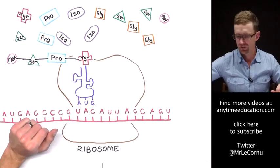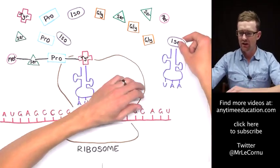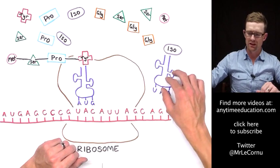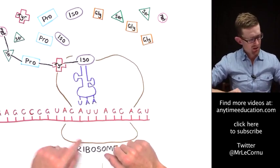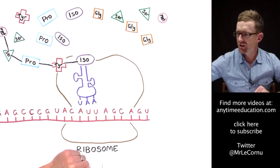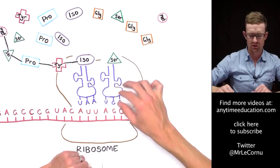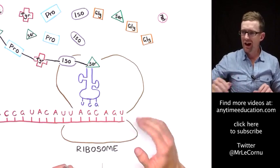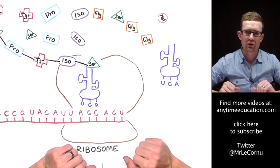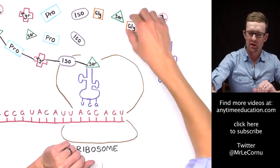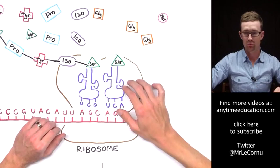Our polypeptide chain is really growing. The next transfer RNA comes in — AUU is the corresponding codon for isoleucine, so isoleucine is collected and delivered to the ribosome. Then AGC — we've had that one before — it coded for serine, so another serine amino acid is collected and delivered. The last codon here is AGU, which also codes for serine. Remember, in some cases there is more than one codon for a particular amino acid. A transfer RNA with the anticodon UCA will collect serine and bring it to the ribosome.